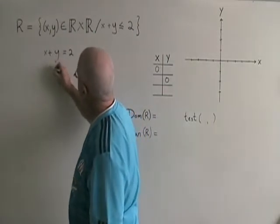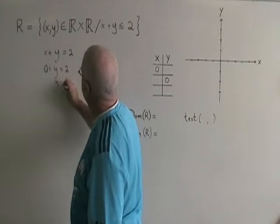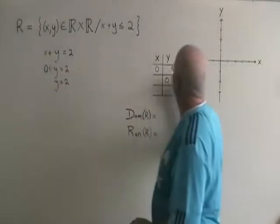I have 0 plus y equals 2. This simplifies to give y equals 2, and I have the point (0,2).